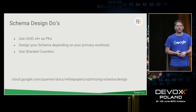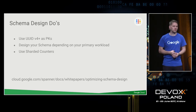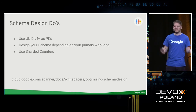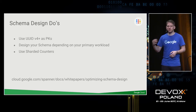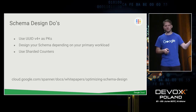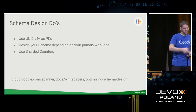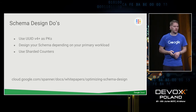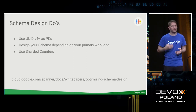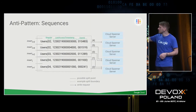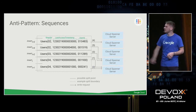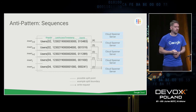One solution is using UUID version 4, which is well-distributed, as a primary key so writes are distributed easily. If you have an existing schema with a sequential ID and want to migrate to Spanner, you can add a sharding ID prefix to distribute the load. Keeping counters in your database? Also shard that counter with a sharding ID, so writes are distributed among the compute power you have available.